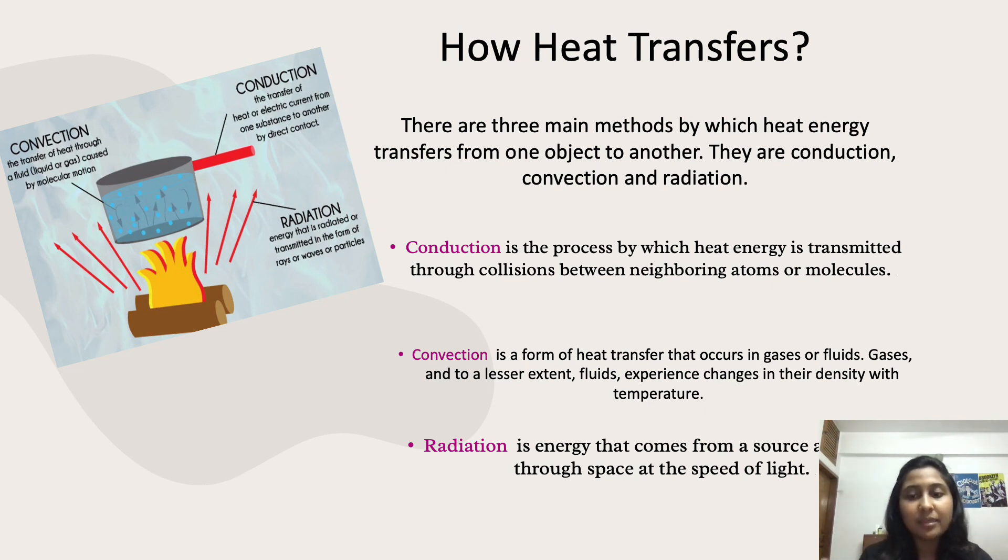Radiation does not rely upon any contact between the heat source and the heated object. No mass is exchanged and no medium is required in the process of radiation. As you can see in this image, radiation is taking place so heat waves are flowing towards the container which is being heated. For example, heat from a stove burner.